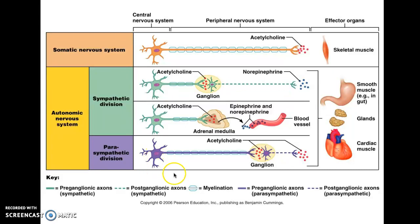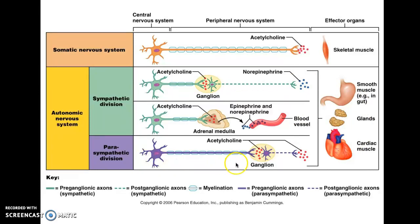In the parasympathetic division, the cell body is in the central nervous system and sends an axon to a ganglion where it forms a synapse with a second neuron. That second neuron sends an axon to the effector using acetylcholine, which is different from the sympathetic division but the same as the somatic nervous system. The autonomic nervous system consistently uses a two-neuron chain to convey information to effectors, with synapses forming in structures called ganglia.